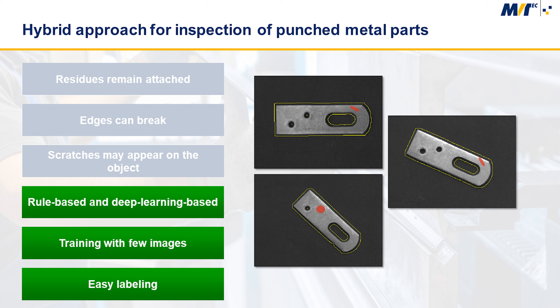You can use the previous knowledge about the shape for this. Then we restrict the area to be examined and apply the deep learning based anomaly detection for defect detection. For this hybrid approach, you only need to know the contour of the model, which is known from the punching process specifications, and OK images.